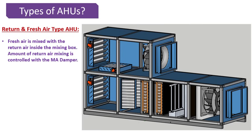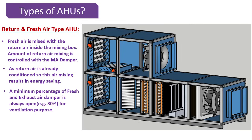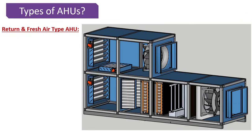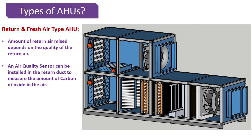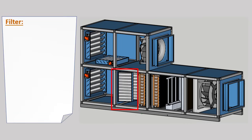In this type of AHU, fresh air is mixed with return air inside the mixing box, and the amount of return air mixing is controlled by the mixing air damper. Since return air is already conditioned, this mixing results in energy savings. A minimum percentage of fresh and exhaust air damper is always open — for example, 30% — for ventilation purposes. A return air quality sensor can be installed in the return duct to measure carbon dioxide levels. If return air quality is poor, more fresh air is taken and less return air is mixed.